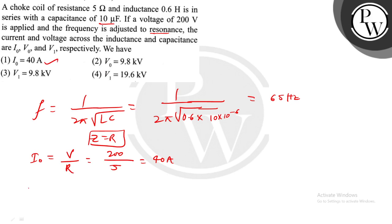So I₀ equals 40 ampere. Now what will V₀ be? V₀ is the potential difference across the inductance. Voltage across inductance is I₀ × XL, which equals 40 into XL. The value of XL is ωL, which is 2πf × L.